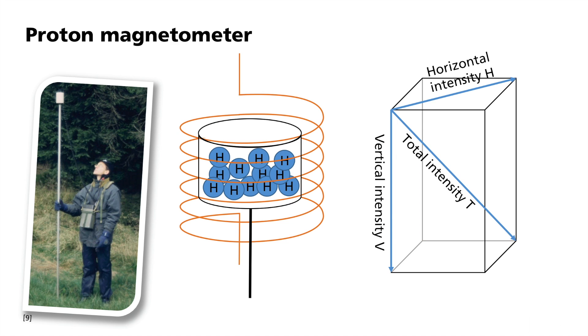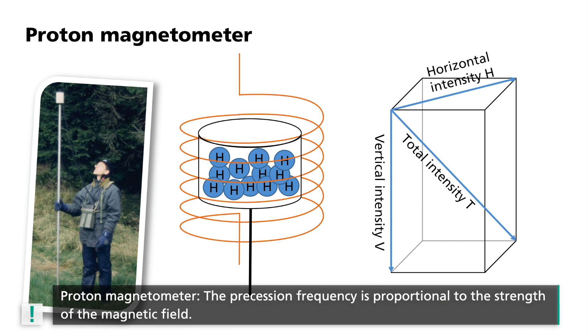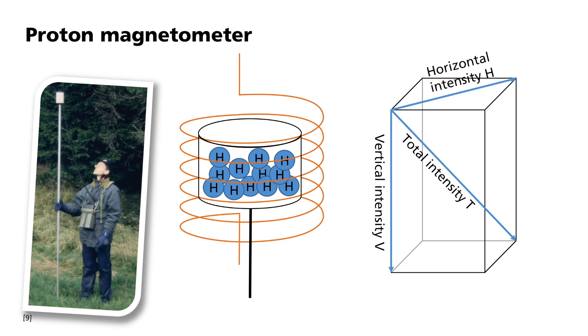The proton spins then begin to precess around the direction of the Earth's magnetic field. They gyrate and induce a voltage in the coil that can be measured. The precession frequency is proportional to the strength of the magnetic field. Measurement using the proton magnetometer is very precise and has an accuracy of about one nanotesla. This method is also not suitable for continuous measurements, since the proton precession rapidly falls off.